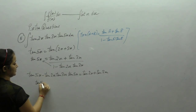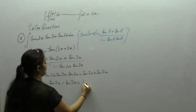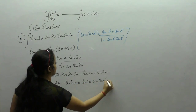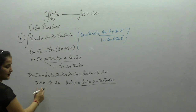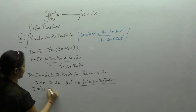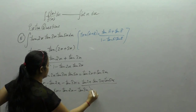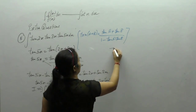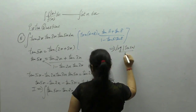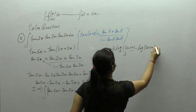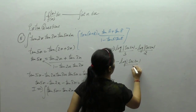Rearranging, tan 5x minus tan 2x minus tan 3x equals tan 2x · tan 3x · tan 5x. This was our given integral, so we substitute this value in. The integral becomes: ∫(tan 5x minus tan 2x minus tan 3x) dx. Applying the formula that integral of tan is log of sec: the answer is (log|sec 5x|)/5 minus (log|sec 2x|)/2 minus (log|sec 3x|)/3 + c.